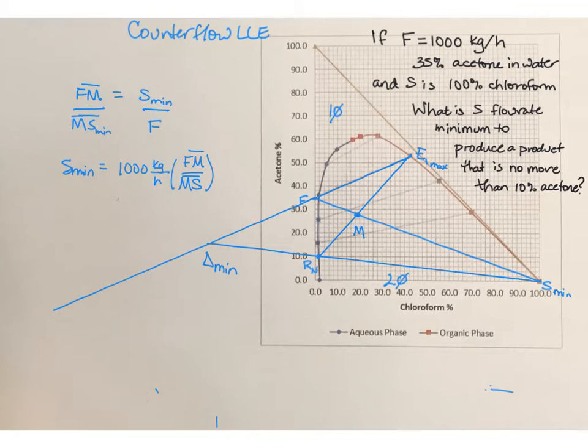So S minimum is going to be the flow rate, 1,000 kilograms per hour, times Fm's length over Ms's length. When I do this measurement on an iPad screen, it's going to probably be very different than what you're measuring. But I get 1.5 centimeters for Fm. From M to S, I get 6.5 centimeters. Multiply that times 1,000 kilograms per hour. If we do that multiplication, I get S minimum is 250 kilograms per hour.